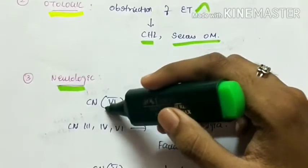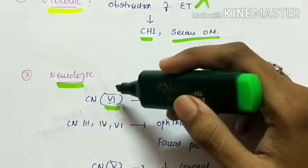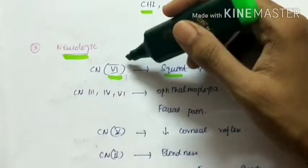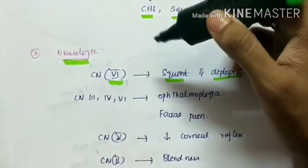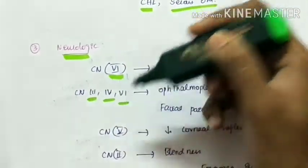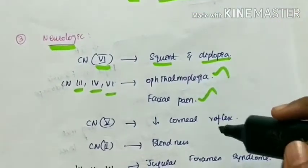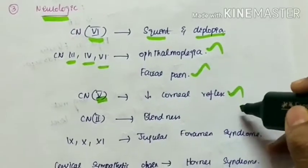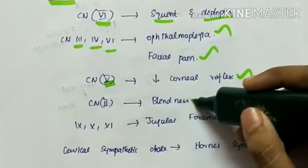Because of involvement of cranial nerve 6, there is squint and diplopia, as the abducens nerve supplies the lateral rectus of the eye. Due to involvement of cranial nerves 3, 4, and 6, there is ophthalmoplegia and facial pain. Cranial nerve 5 involvement leads to decreased corneal reflex. Second cranial nerve (optic nerve) involvement leads to blindness.